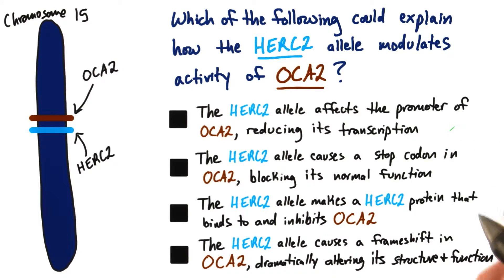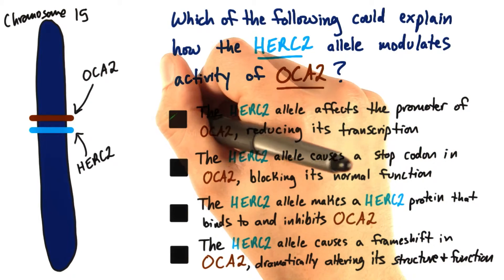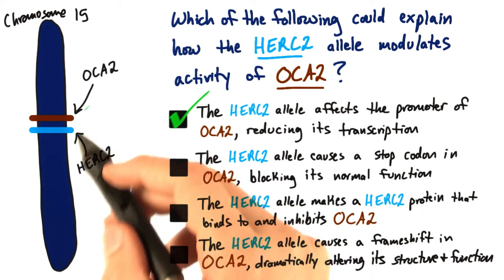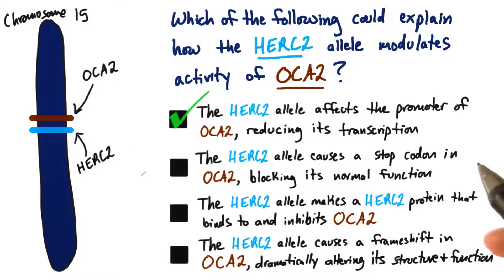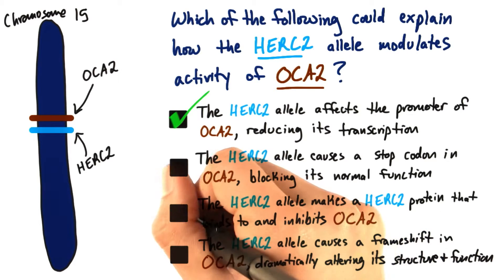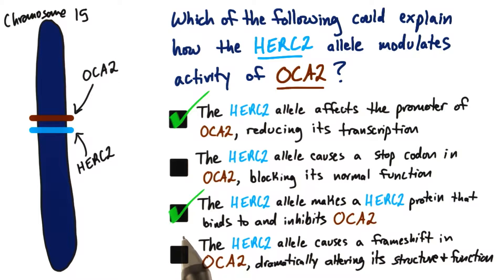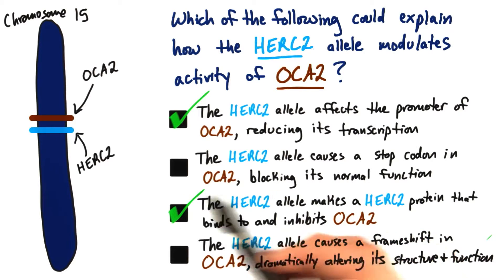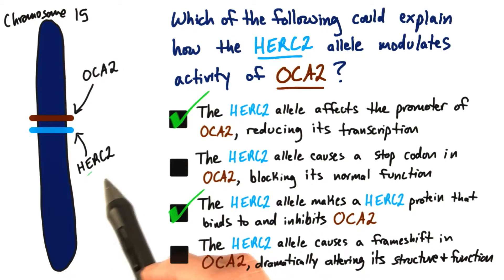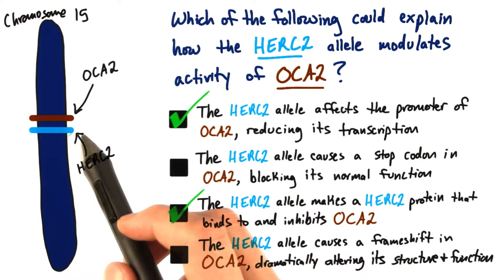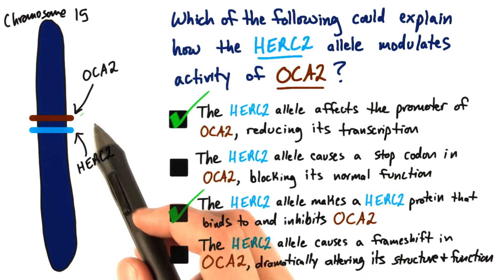The HERC2 allele could affect the promoter of OCA2, because the genes are so close together. Or the allele could alter the HERC2 protein so that it interacts with OCA2 and directly blocks its action. The other options aren't possible here, because they change the coding region of OCA2. But we know that the mutation is within the HERC2 gene, which is beside OCA2.